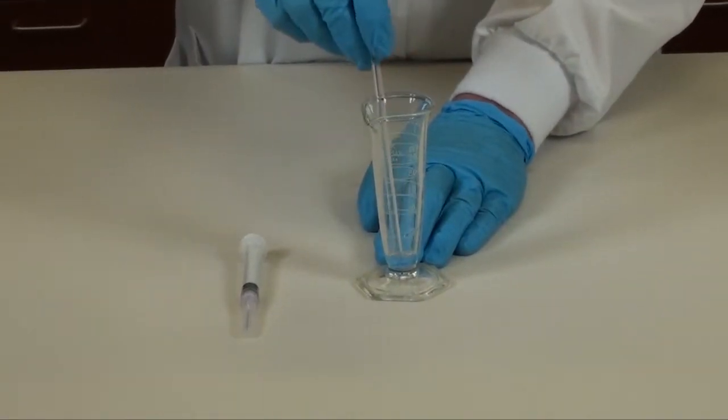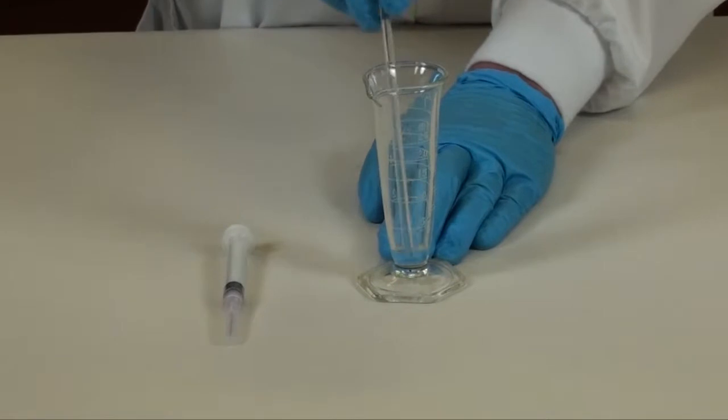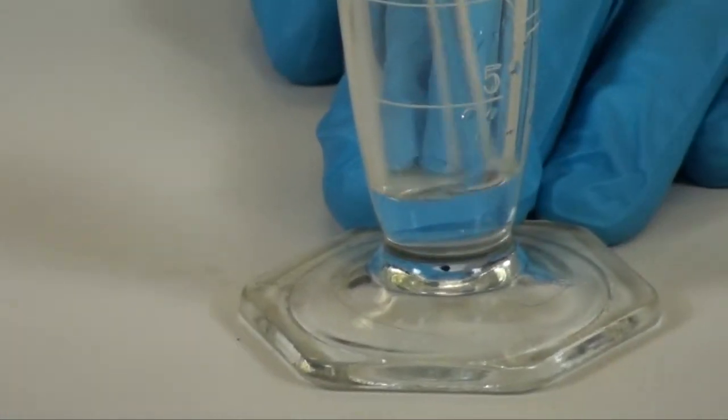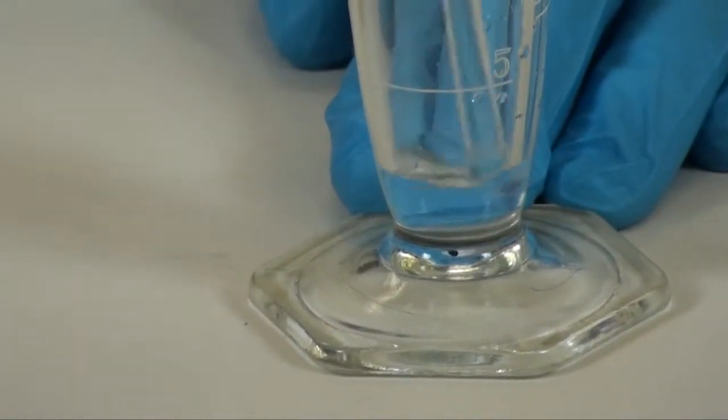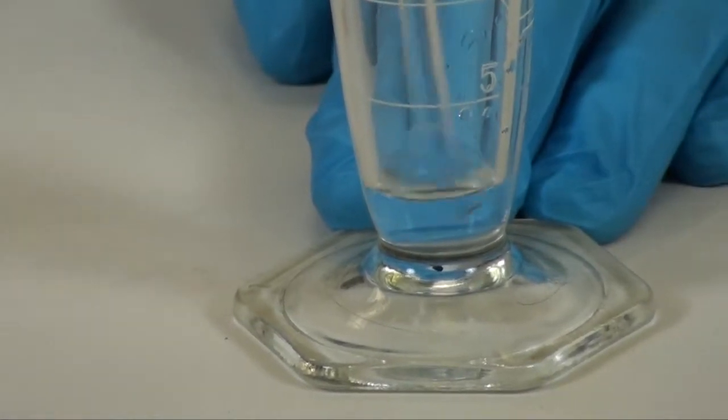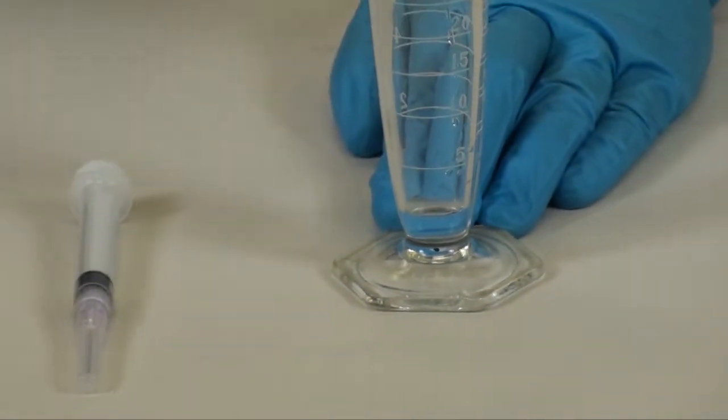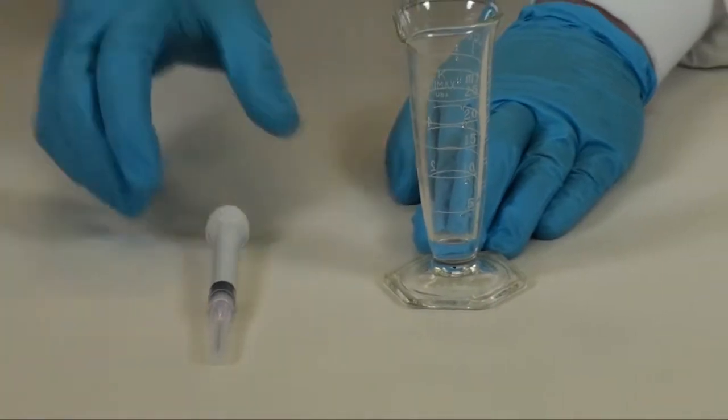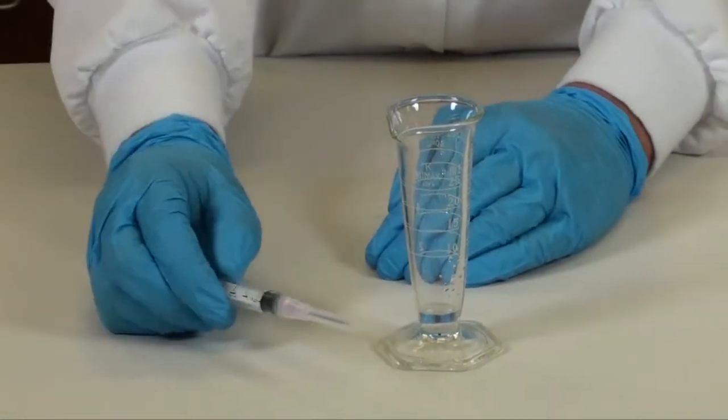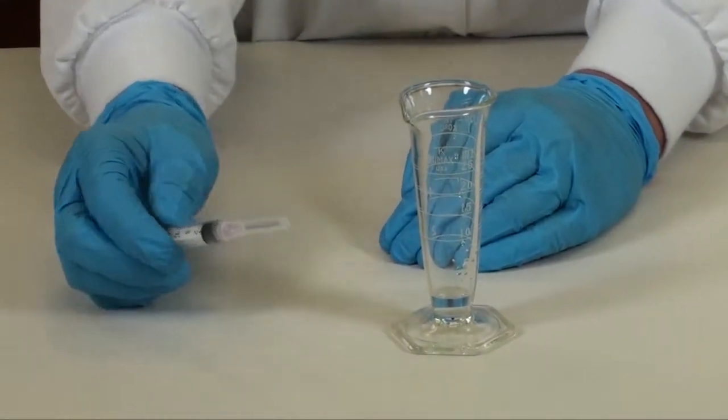In this step before we withdraw the acyclovir solution and lidocaine from the graduated conical, we want to be sure it's in solution. Once you're sure it's in solution, gently lay your glass stirring rod and use the 3ml syringe used previously.